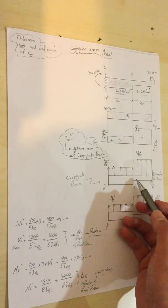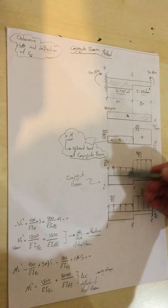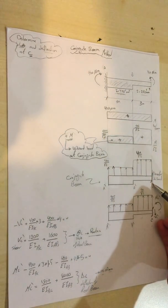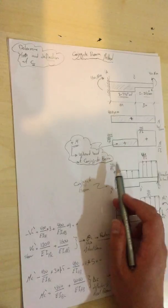This is A dash, B dash, C dash. So how can I transfer this bending moment into loading and why did I make it like that?